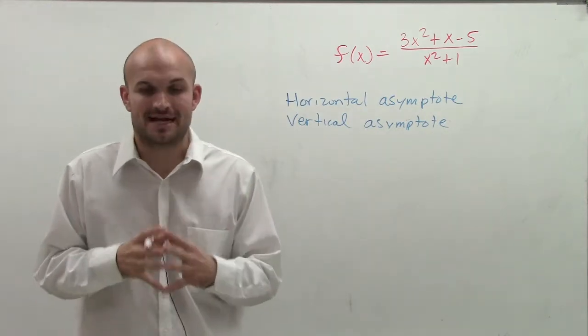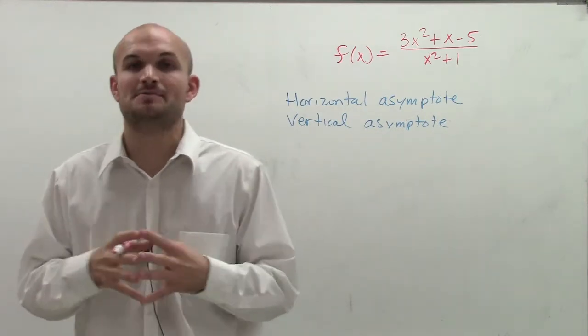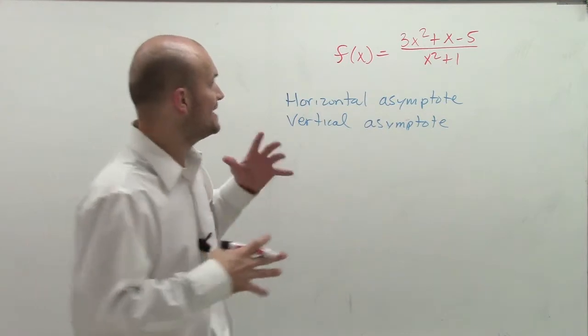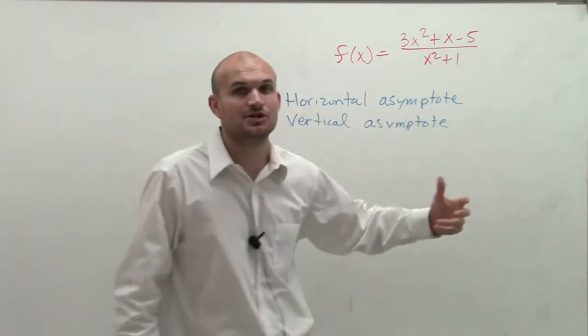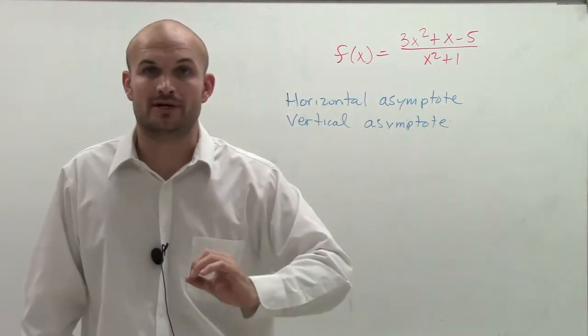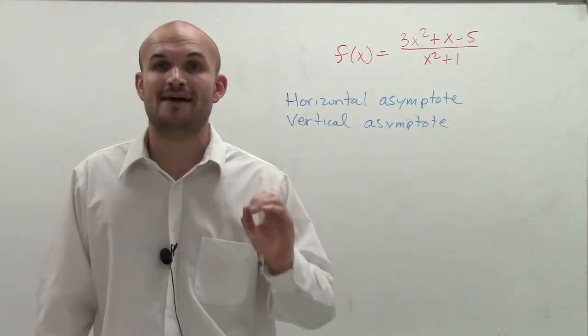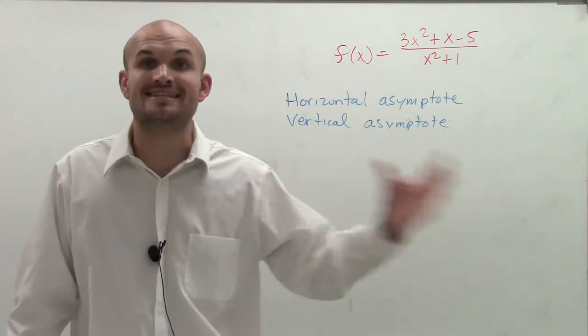So we're going to use a horizontal asymptote test. And what the horizontal asymptote test tells us to look at is the exponent of our leading term of each polynomial in the denominator and the numerator. Now, to look at that leading term, we have to make sure that our polynomials are in descending order.